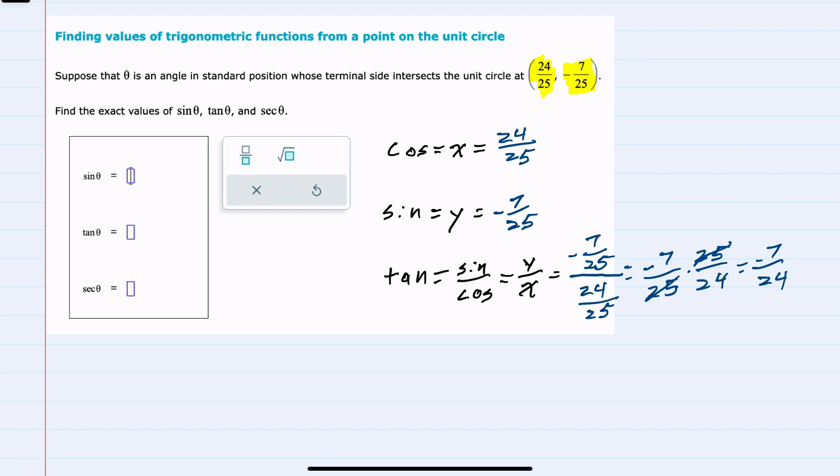From here, continuing to our other trigonometric functions, secant is 1 over cosine. Since cosine is x, that's 1 over x or the reciprocal of x. Since our x value is 24/25, the reciprocal would be 25/24, just inverting that fraction.